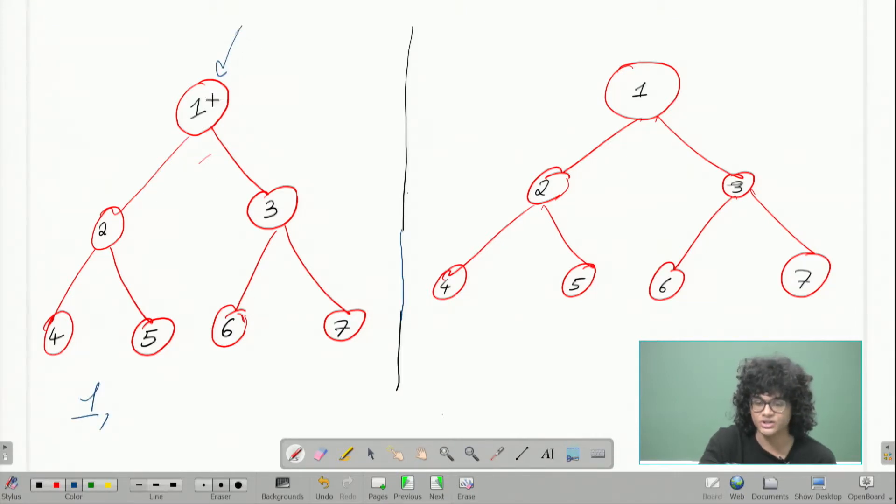Then we see its children, its children are two and three. So let's pick one, say two. Now, after two, we do not explore three, because three is a sibling. And we want to see the children before the sibling. So we see the children of two, there are four and five. So we come to four. And now we see that this whole depth has been explored.